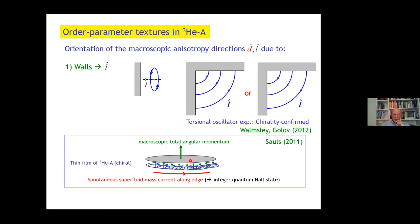For example, when there is a corner in a container, and L always has to be perpendicular to the wall, it must look like this or like this. It's chiral. There is a difference between this and that, which was measured in 2012 with the torsional oscillator confirming this chirality. Also, if helium-3 is confined to a slab, then the L vectors are all aligned, giving rise to a macroscopic total angular momentum. Like in the integer quantum Hall effect, this generates a spontaneous superfluid mass current along the edge.